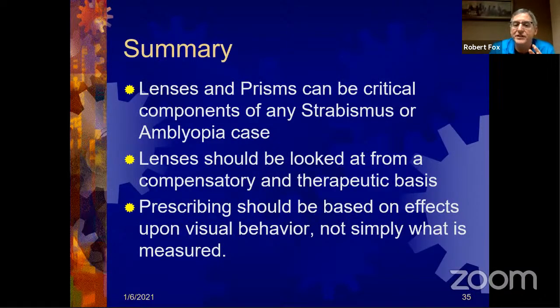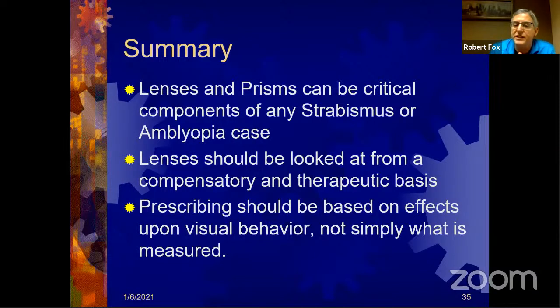Would she have cleared up on her own? Maybe. But look at what we did for her with lenses and prisms — we were able to help her function, get through school, and be so much less stressed. Summary: lenses and prisms can be critical components when you see amblyopia and strabismus cases. Look at them not just compensatorily but therapeutically. Prescribing should be based on the effects upon visual behavior, not simply what is measured — just because you measure plano and plus four doesn't mean you should prescribe that. Try performance tests, be patient, communicate what you're doing, and warn parents of changes in the future.